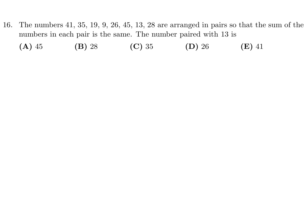The numbers 41, 35, 19, 9, 26, 45, 13, and 28 are arranged in pairs so the sum of each pair is the same. The number paired with 13 is what? First, add up all eight numbers — the total is 216. Divided into four pairs, each pair has a sum of 54.